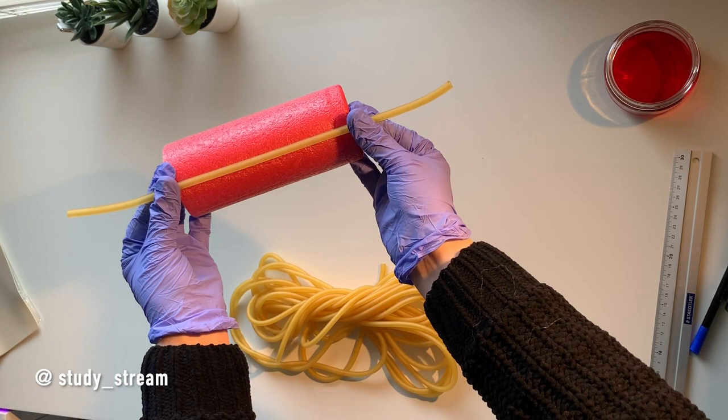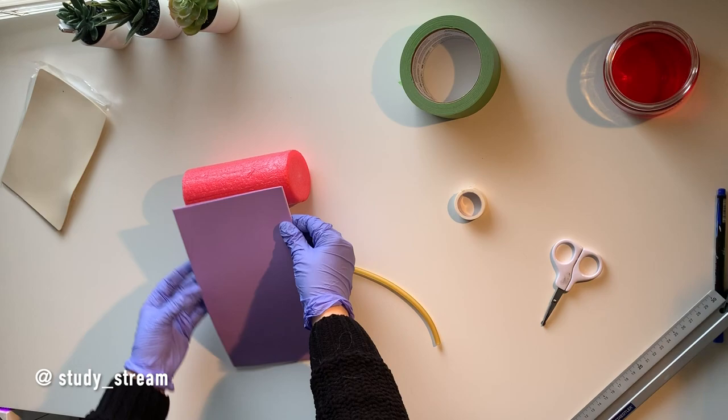Cover the pool noodle with a self-adhesive foam sheet. This is an optional step but I have found that the tubing and the fake skin adhere much better to the soft foam sheet surface compared to the surface of the pool noodle.